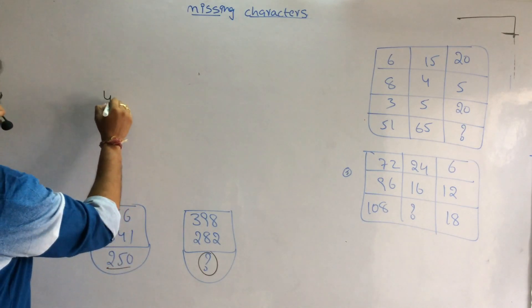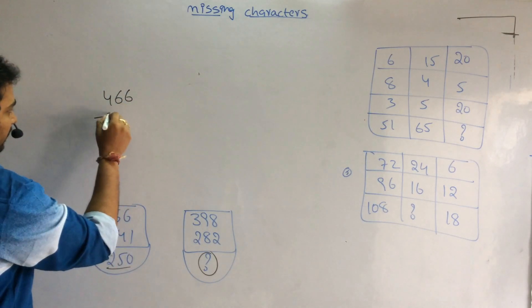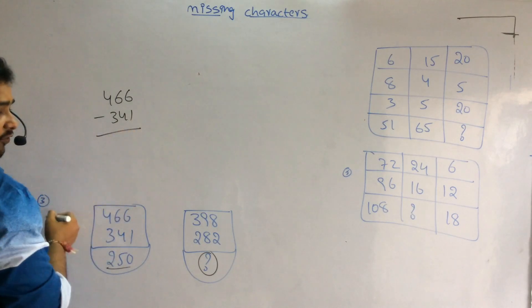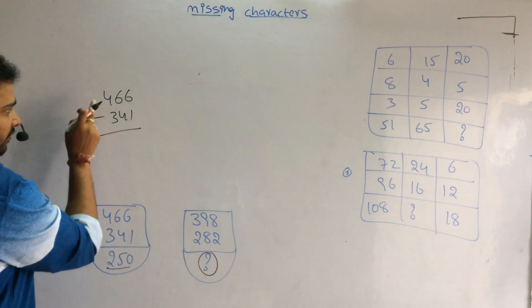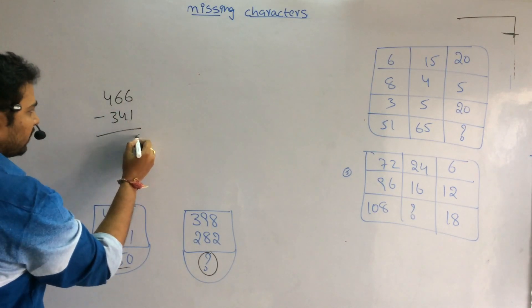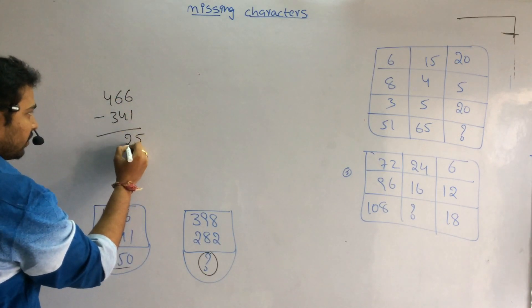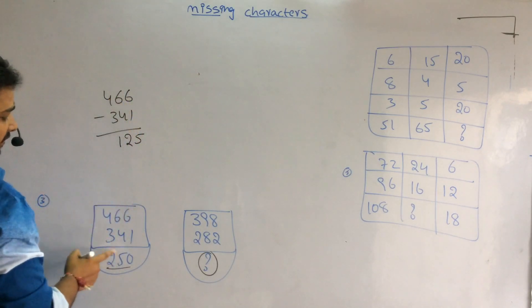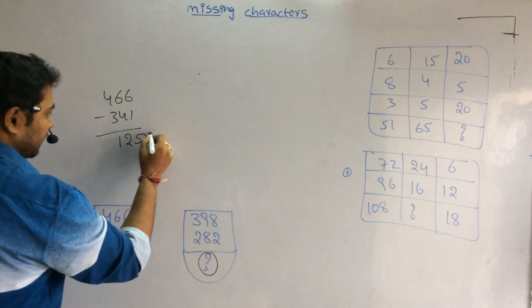Next, third question. How did 250 come from using these numbers? 466 and 341. When we subtract 341 from 466, it is 125. But it is 250, that means multiply by 2.